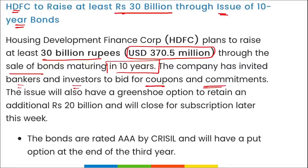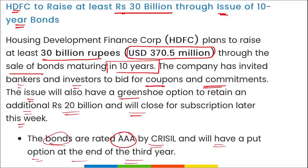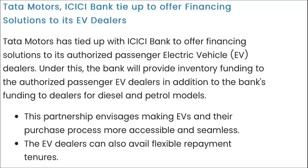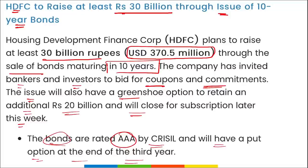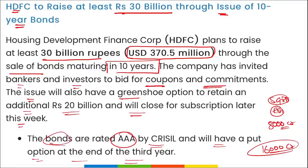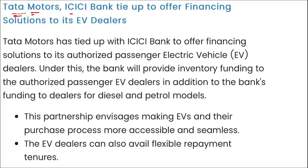The issuance of these bonds will have a green shoe option to retain an additional 20 billion rupees and will close for subscription later this week. The bonds are rated triple-A by CRISIL and will have a put option at the end of the third year. Also, RBI launched Sovereign Green Bonds in two tranches of 8,000 crore rupees each, totaling 16,000 crore rupees.